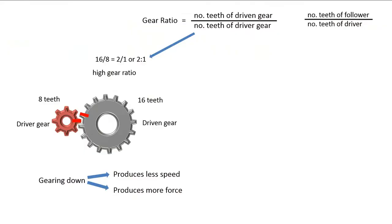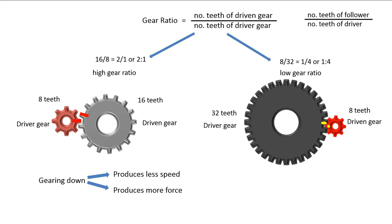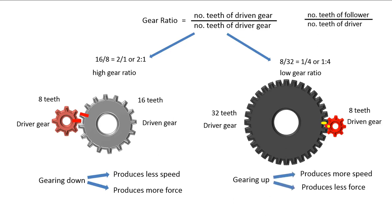Let's now return to the other side of this slide. Let's reverse the operation of each gear, so the larger one is the driver gear and the smaller one is the driven gear. The gear ratio is 1 to 4, and is a low gear ratio. Observe how many turns the small one makes while the larger gear turns once. You saw it turn 4 times. The ratio 1 to 4 tells us that 1 revolution of the driver causes 4 revolutions of the driven — it goes faster. This is called gearing up, which refers to speed. Gearing up produces more speed, but less force on the turning axle.